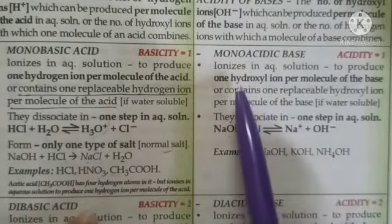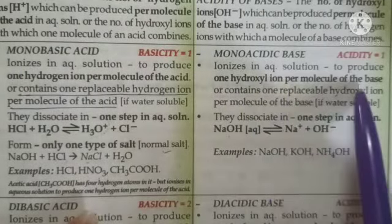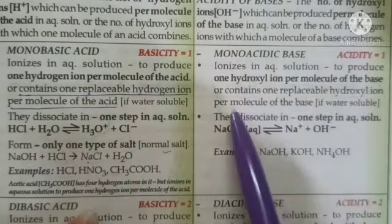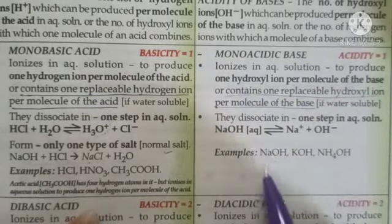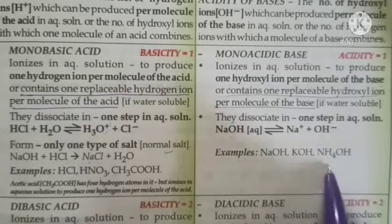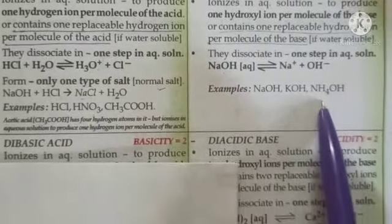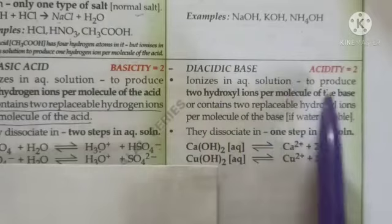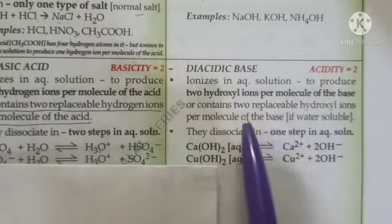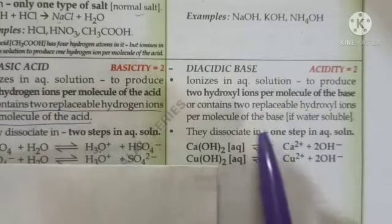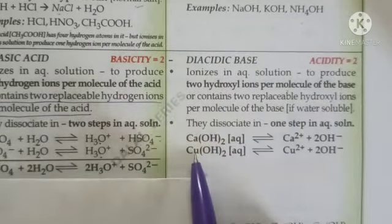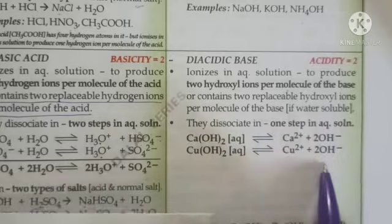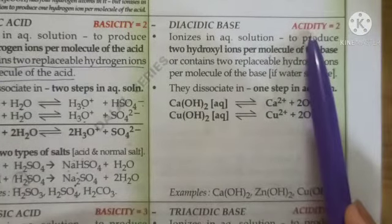A monoacidic base produces one hydroxyl ion per molecule, or contains one replaceable hydroxyl ion per molecule. Examples are sodium hydroxide, potassium hydroxide, and ammonium hydroxide. A diacidic base ionizes in aqueous solution to produce two hydroxyl ions per molecule, or contains two replaceable hydroxyl ions per molecule. Examples are calcium hydroxide and copper hydroxide. They dissociate in one step and their acidity is two.